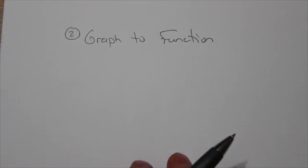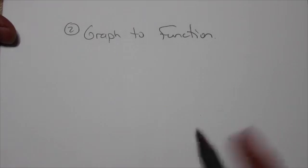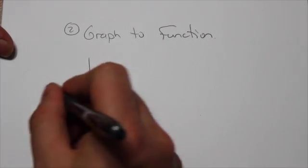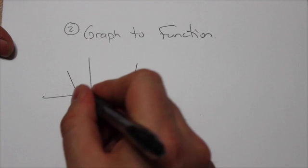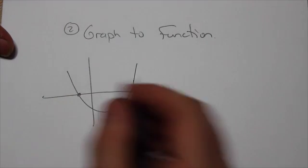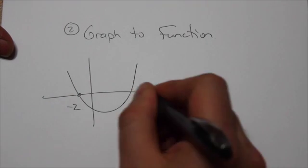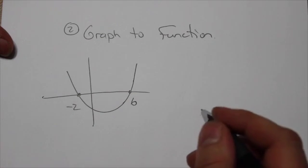But this time we're going to look at a slightly different bit of information. Let's assume that the graph looks something like this, where I've got an x-intercept here of negative 2, and an x-intercept over here of positive 6.